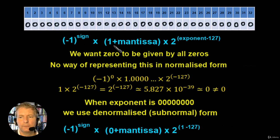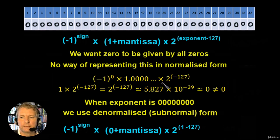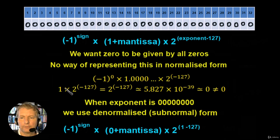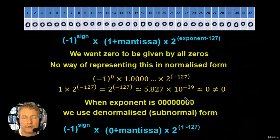The mantissa: we would be adding 1 onto the mantissa, so the mantissa in the fixed point number system would be given by the 1 here and the fractional part which would be 0.0000 and all the rest of the zeros. This would be times 2 to the power of the exponent minus 127, and the exponent is all zeros, so it would be 0 minus 127, giving 2 to the minus 127. So we get the value 1 times 2 to the minus 127, which is approximately 5.827 times 10 to the minus 39. It is a very small number but it is not equal to 0.